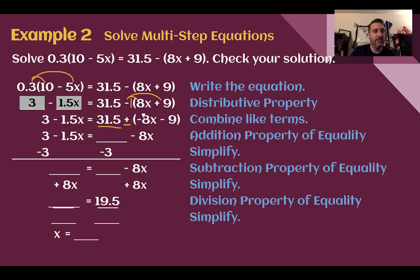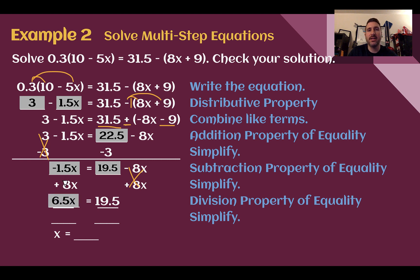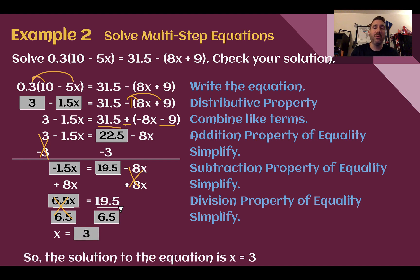Now we can combine: 31.5 plus negative 9 — so 31.5 minus 9 ends up being 22 and a half. Next we start solving for our variable. After subtracting 3 from both sides, I'd be left with negative 1.5x on the left and 19.5 on the right with that minus 8x. Then I add 8x to both sides to cancel it off the right. Negative 1.5 plus 8 is 6.5x. Last, dividing both sides by 6.5 — 19.5 divided by 6.5 is 3. So our solution is x equals 3.